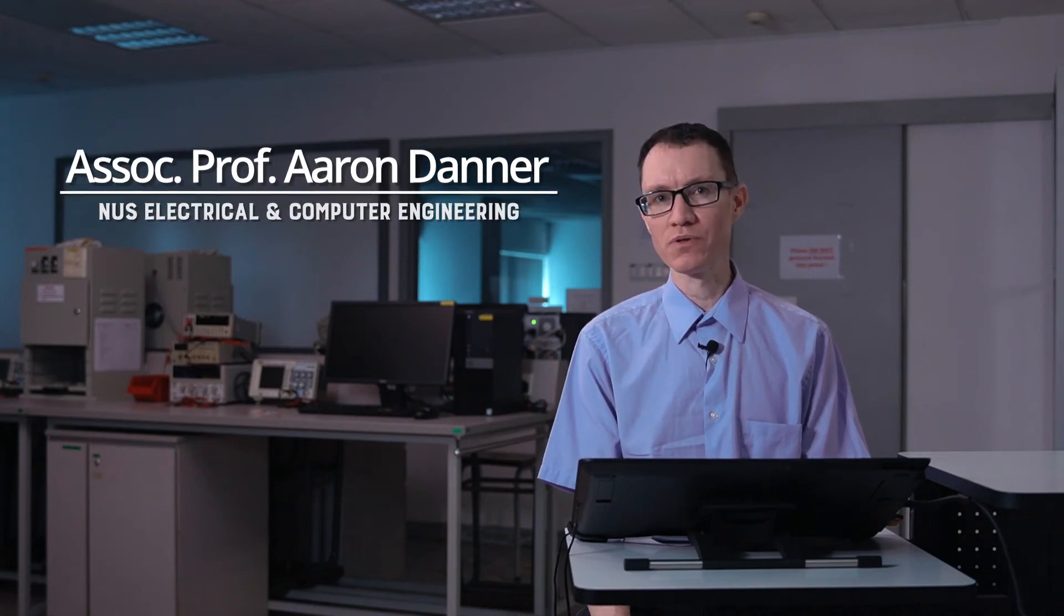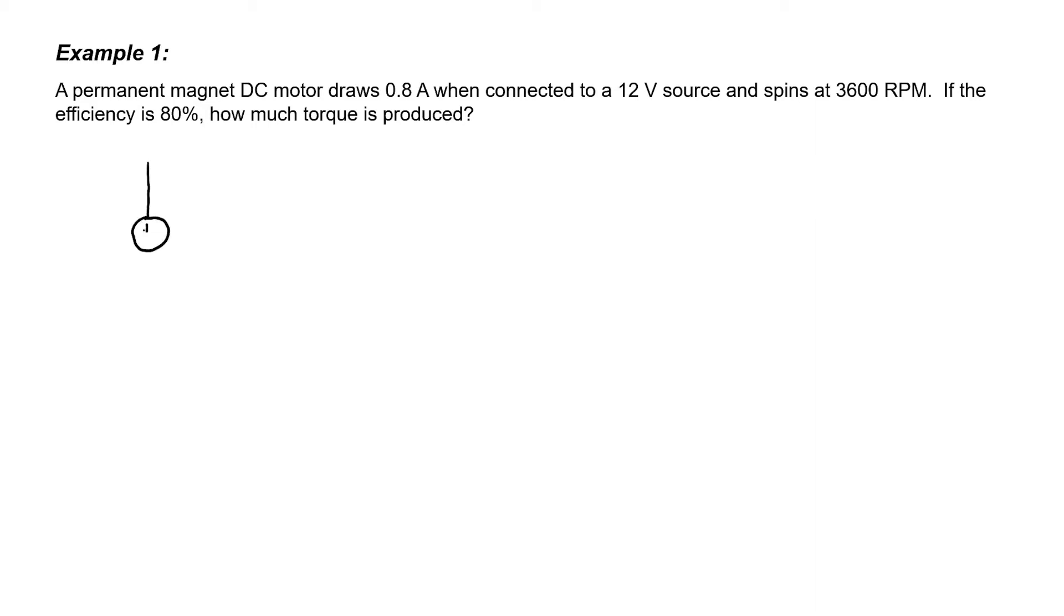Let's now work out some example problems related to DC motors. In the first problem, we're going to find out how much torque is produced by a spinning permanent magnet DC motor. We're told that this motor draws 0.8 amperes when it's connected to a 12 volt source and this causes the motor to spin at 3600 RPMs.